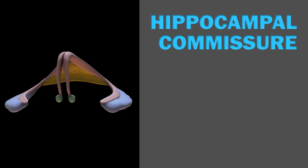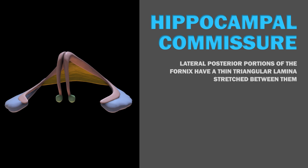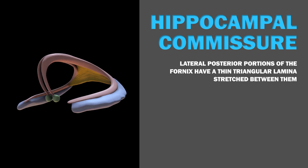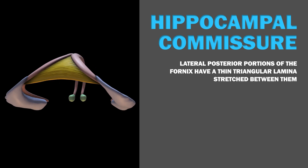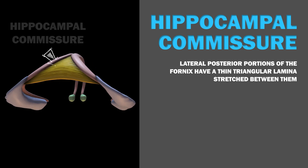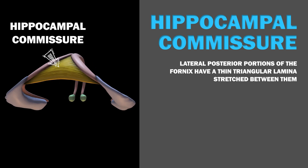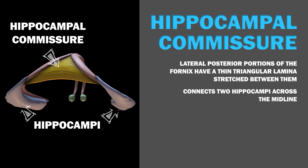Lastly, there is also a commissural tract in the fornix. The lateral posterior portions of the fornix have a thin triangular lamina stretched between them, containing the fibers of the hippocampal commissure, or commissure of the fornix, which connects the two hippocampi across the midline.